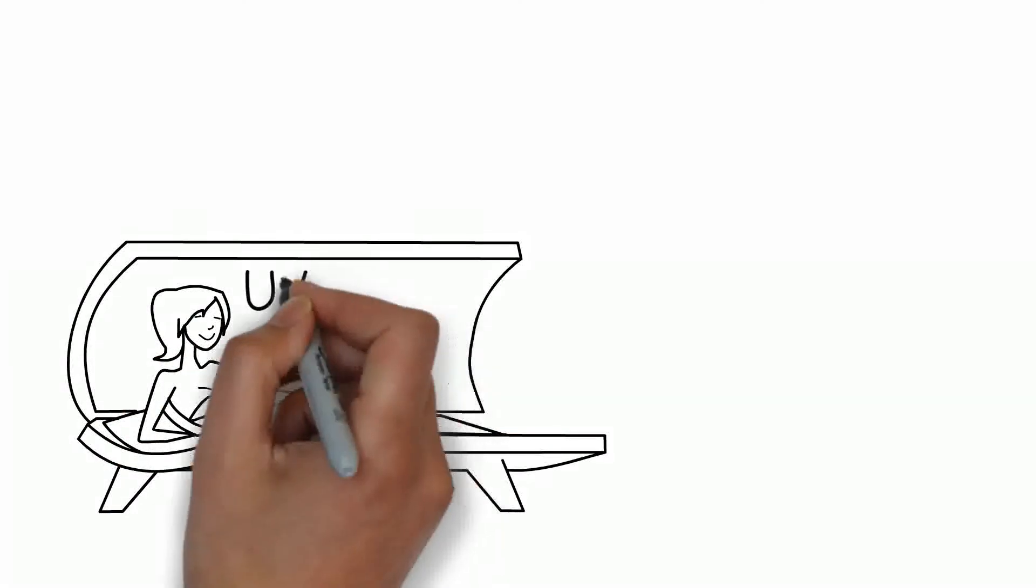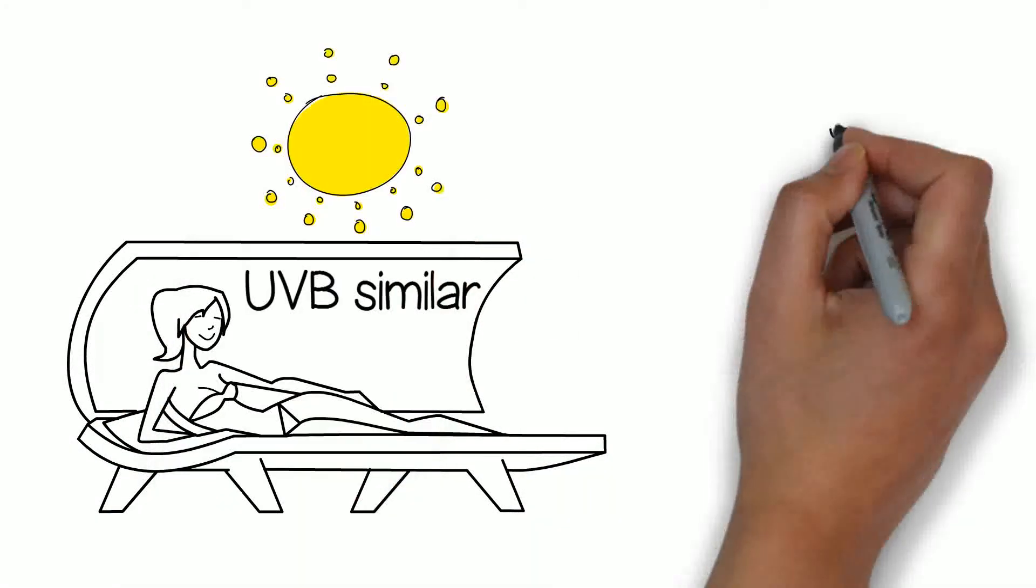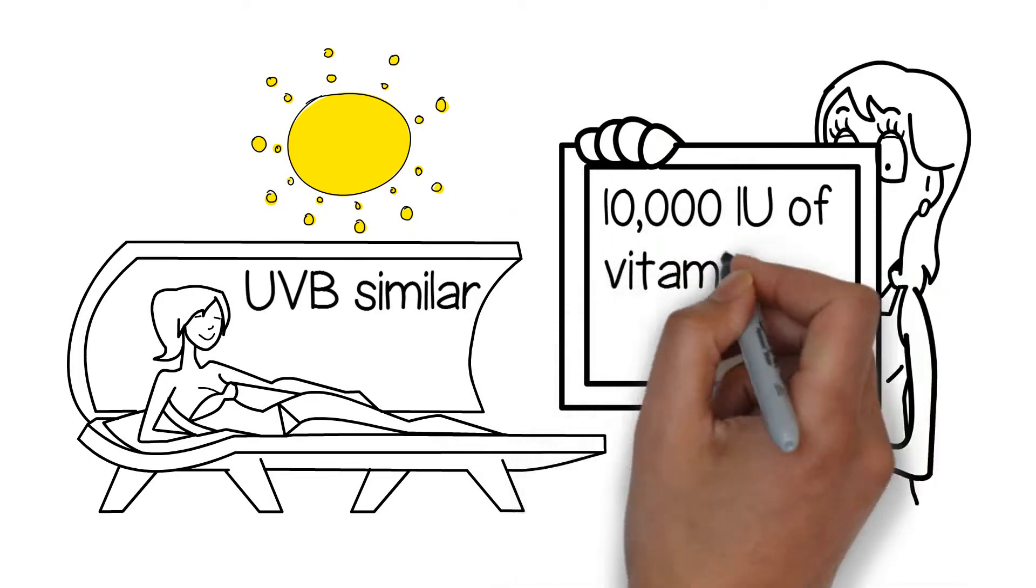A sunbed with UVB, similar to summer sunshine, can provide up to 10,000 IU of vitamin D per session.